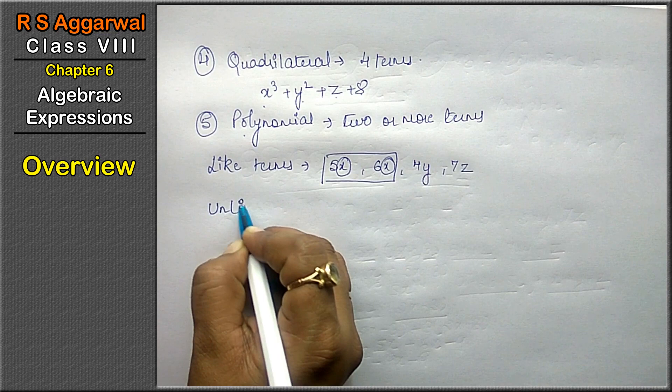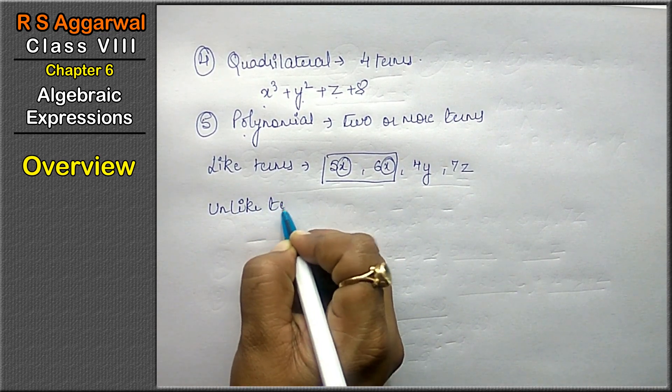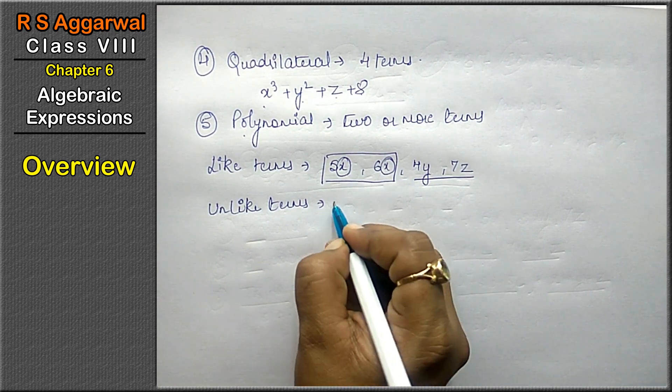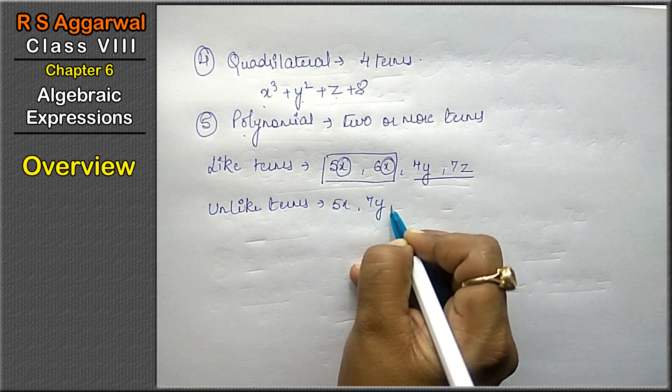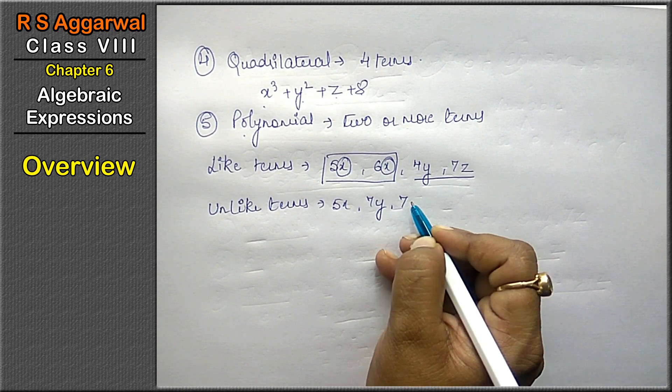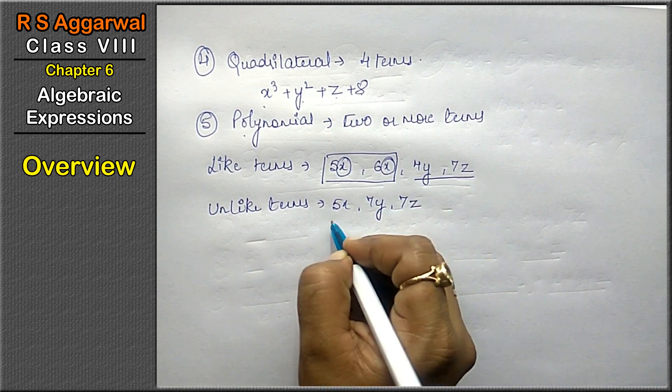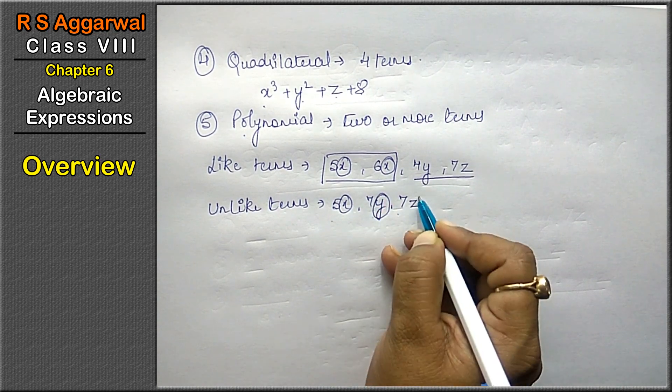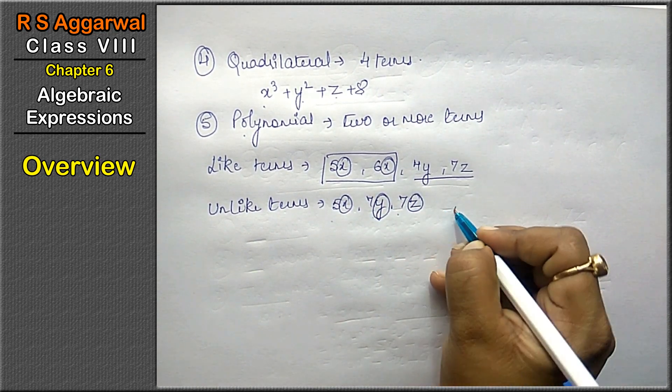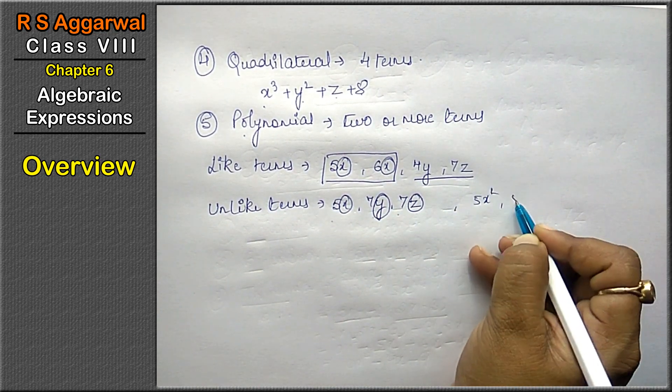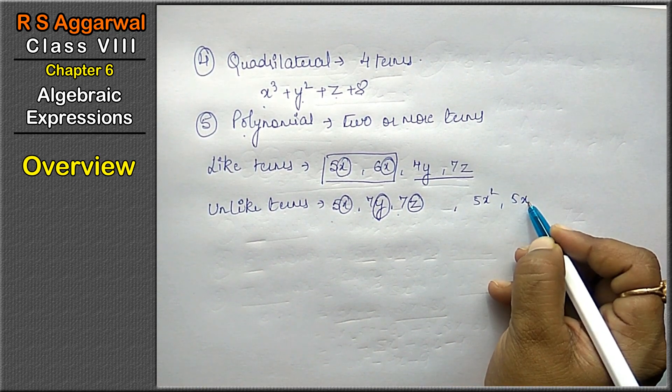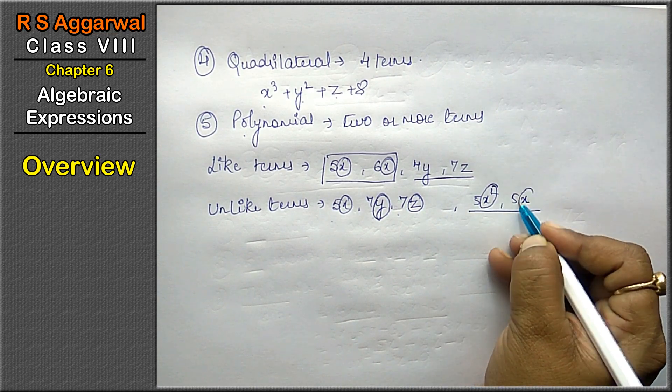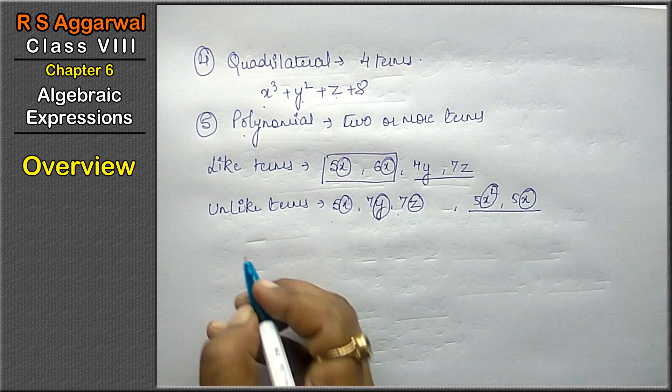Unlike terms are those whose variables are not the same. Like, one is 5x, one is 7y, one is 7z. These are the unlike terms because their variables are not the same. If I say 5x² and 5x are like terms or unlike terms? These are also unlike terms because this is x² value and this is x value.